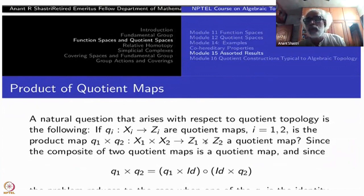So you have to be very careful in extending results to product spaces. The product of two maps, say X_1 to Z_1, X_2 to Z_2, they are quotient maps. Q_1 × Q_2 from X_1 × X_2 to Z_1 × Z_2. Is this a quotient map? The general answer is no. However, one won't leave it like that.